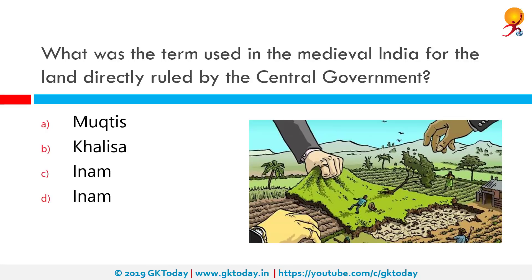What was the term used in medieval India for land directly ruled by the central government? The correct answer is Khalisa. The revenue-yielding land administered directly by the imperial revenue department was known as Khalisa. Ordinarily, the most fertile and easily administered lands were brought within the Khalisa.